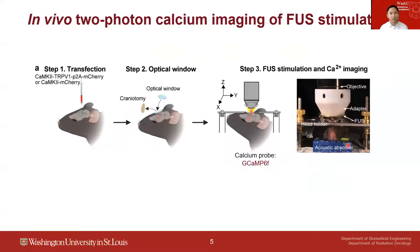Here is the experimental workflow. We first packaged the TRPV1 genes into a lentivirus with the CAMK2 promoter, and then injected the lentivirus into the mouse brain. The CAMK2 promoter allows the expression of TRPV1 specifically in excitatory neurons. After one month for virus expression, a surgery was performed to remove a piece of the skull and replace it with a cover glass.